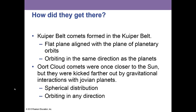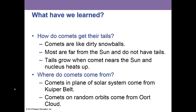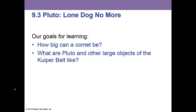The Kuiper Belt is a flat plane aligned with the plane of the planetary orbits, orbiting in the same direction as the planets. The Oort Cloud comets were once closer to the sun but were kicked out farther by gravitational interactions with the Jovian planets. In summary: comets get tails because they're like dirty snowballs that heat up near the sun. Their tails grow as the nucleus heats up. They come from the Kuiper Belt and the Oort Cloud.